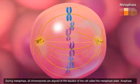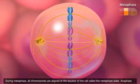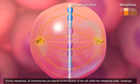During metaphase, all chromosomes are aligned at the equator of the cell, called the metaphase plate.